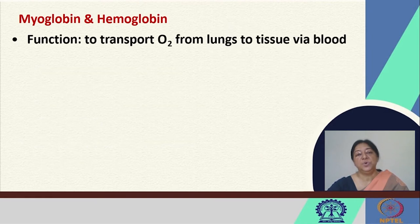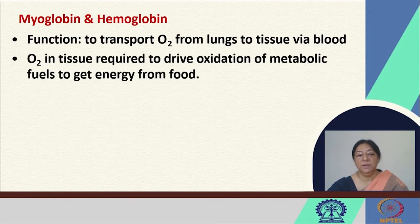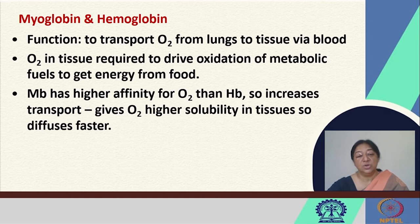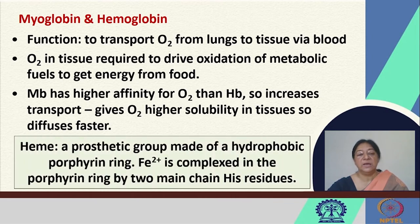The function is to transport oxygen from the lungs to the tissue via blood, and oxygen in the tissue is required to drive the oxidation of metabolic fuels to get energy from food. Myoglobin has a higher affinity for oxygen compared to hemoglobin, which increases its transport capability, gives oxygen higher solubility in tissues, and allows it to diffuse faster. We will see the specific binding curves and how they relate to storage versus transfer proteins.